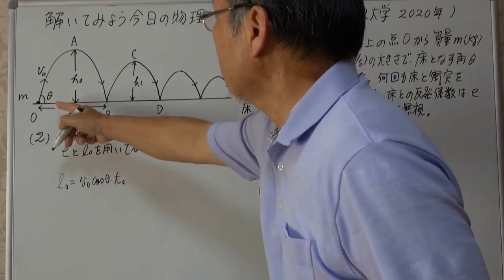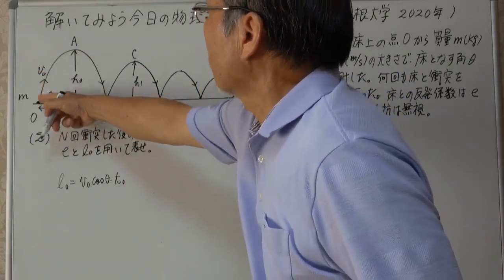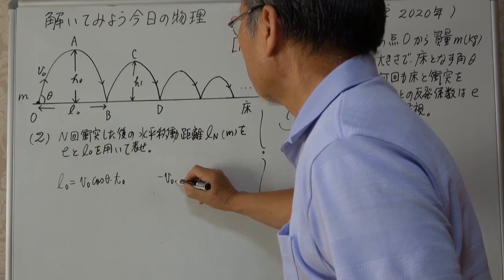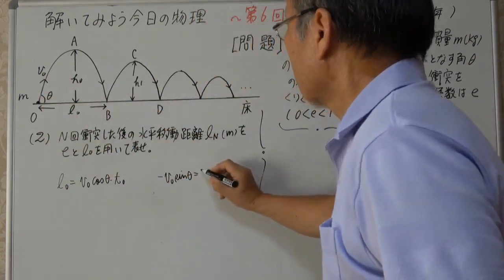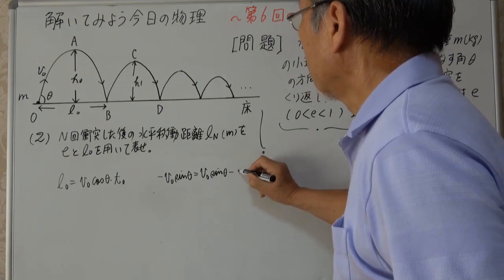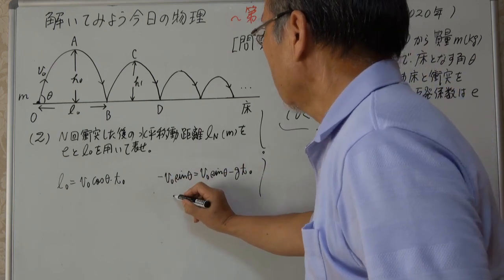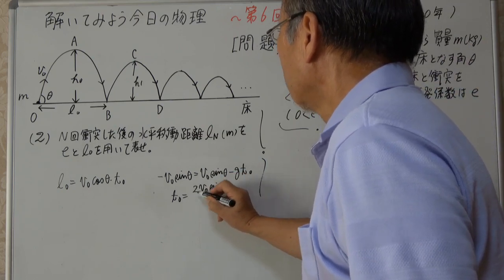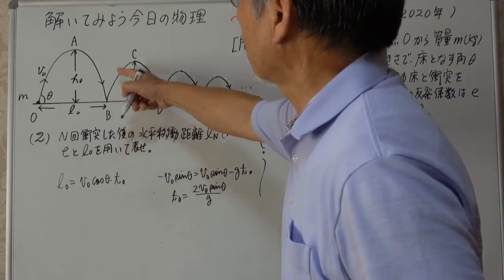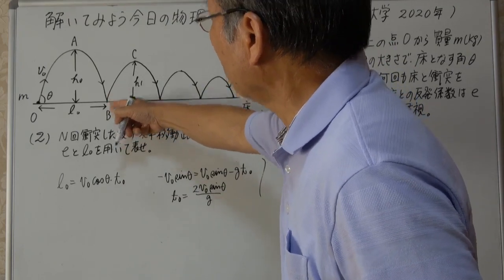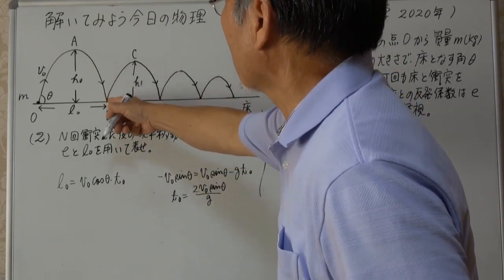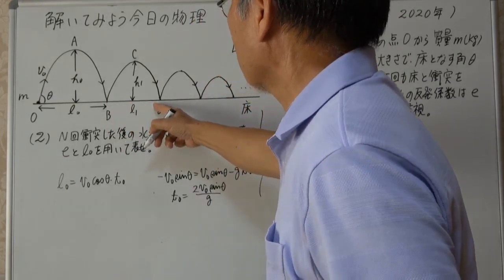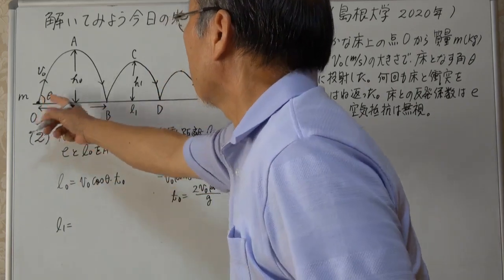L0はV0cosθにT0をかけたものです。水平方向は等速運動をしますから。T0は最初の飛行時間で、V0sinθで投げ上げて戻るまでの時間です。鉛直方向について、－V0sinθ＝V0sinθ－gT0より、T0＝2V0sinθ／gとなります。1回目の区間L1を求めます。